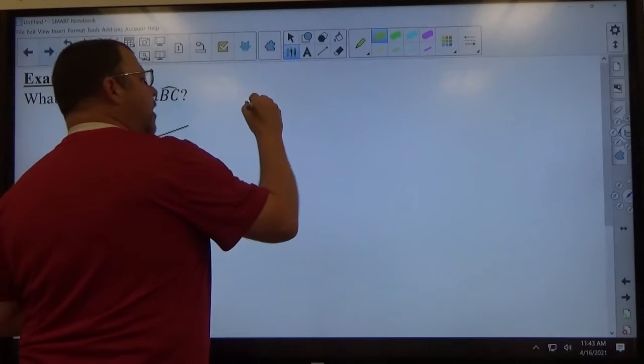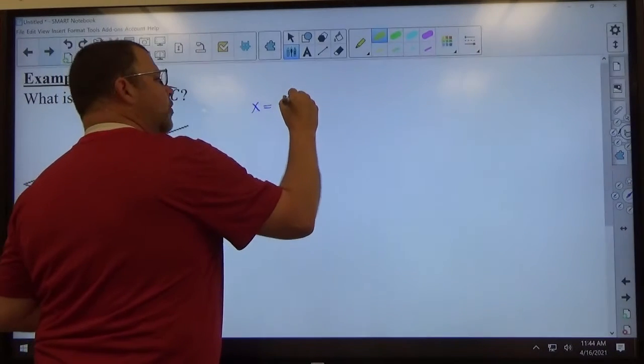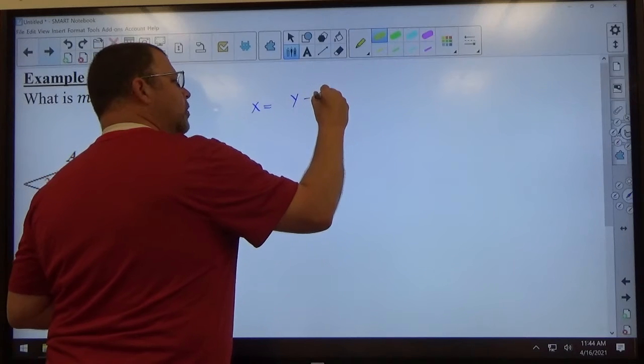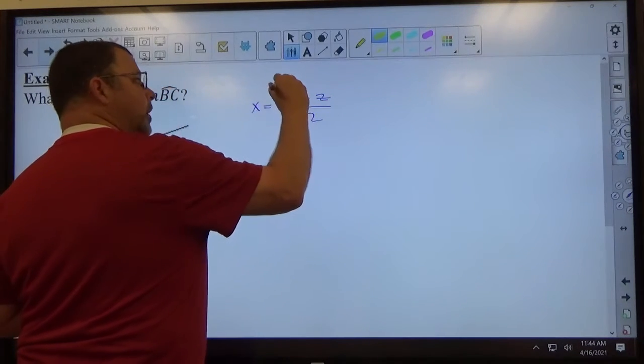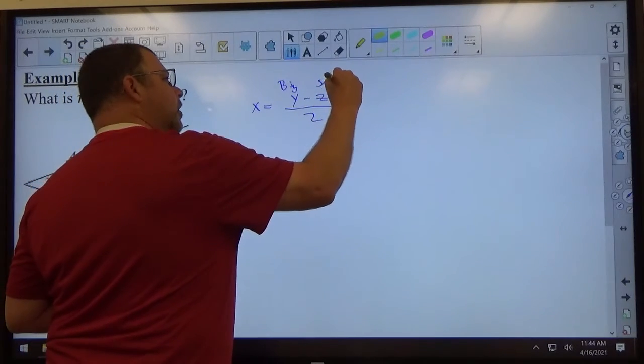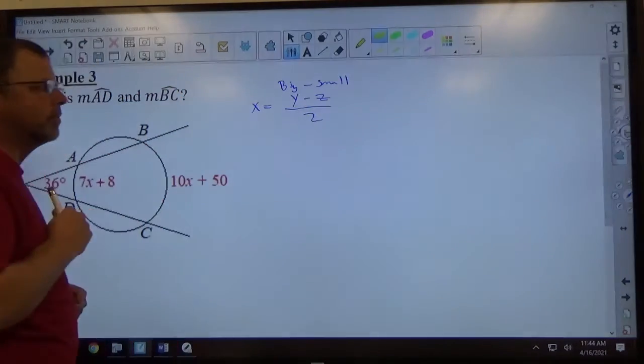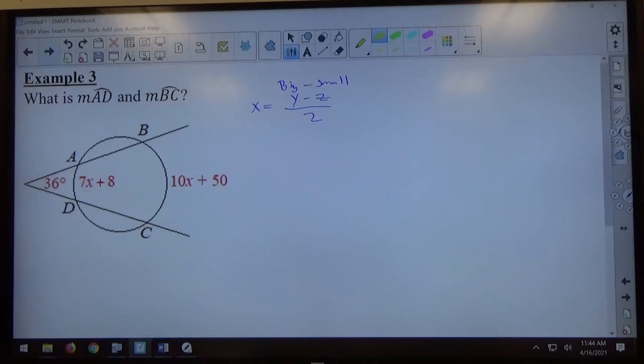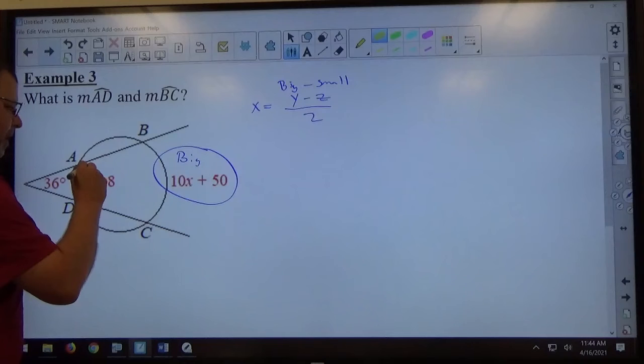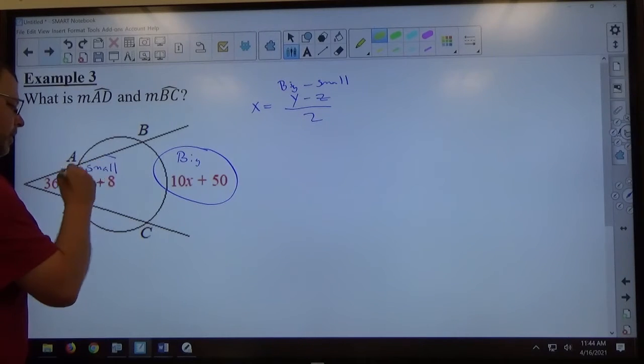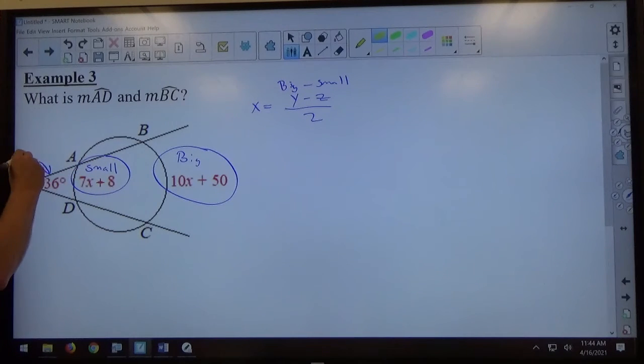So the formula says the outside angle equals arc 1 minus arc 2 over 2, right? Big arc minus small arc divided by 2. So this is my big arc, this is my small arc, and this is my angle. That's my x, right?